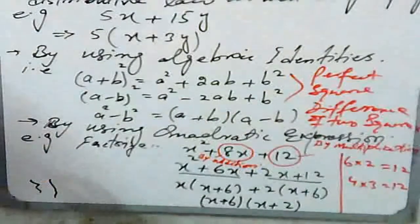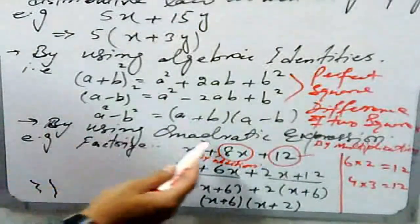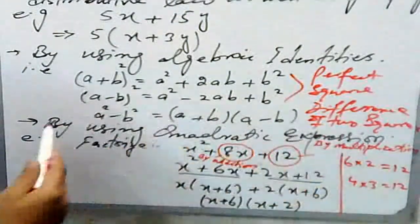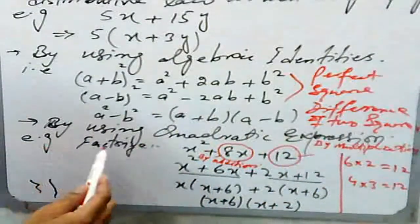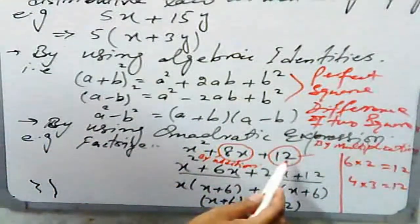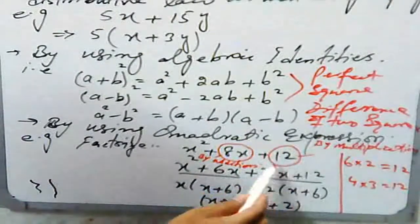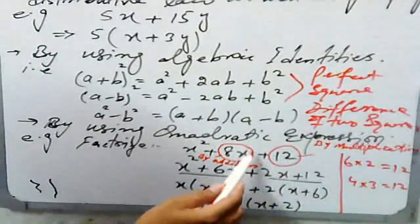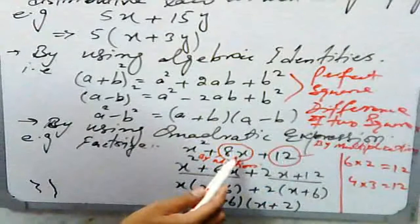Third, by using quadratic expression. For example, factorize x² + 8x + 12. By multiplication you will get 12, and by addition you will get 8x. So we have the factors: 6 times 2 is 12, by multiplication you will get 12. But 4 times 3 is also 12.